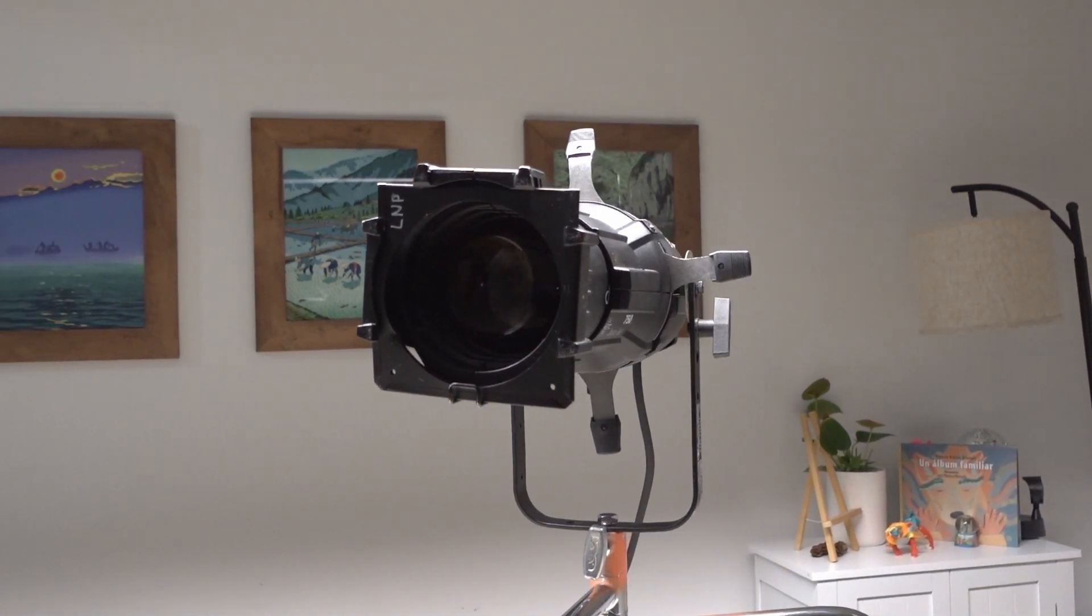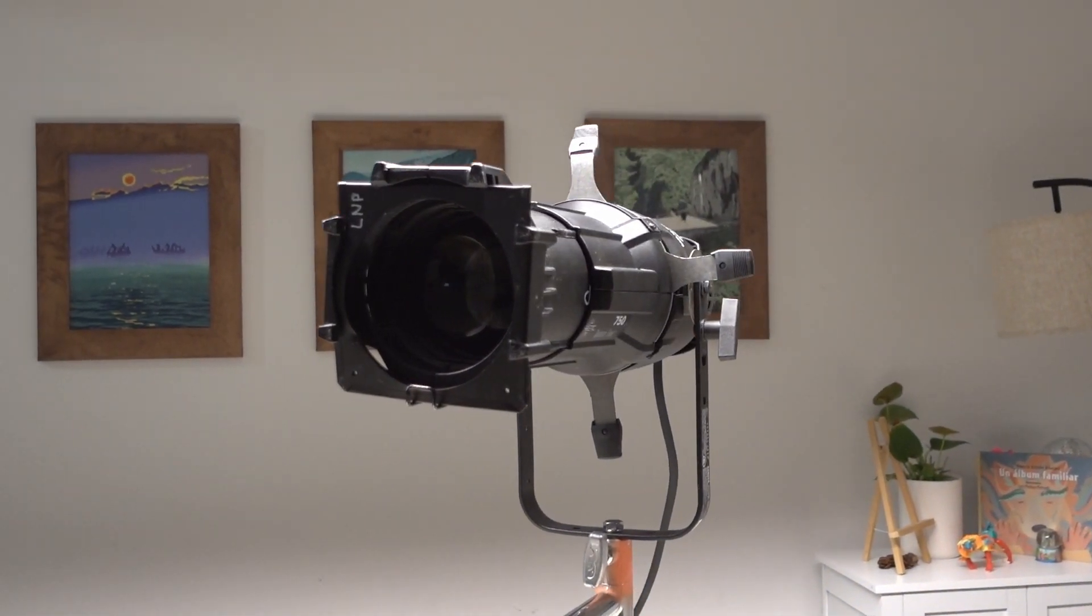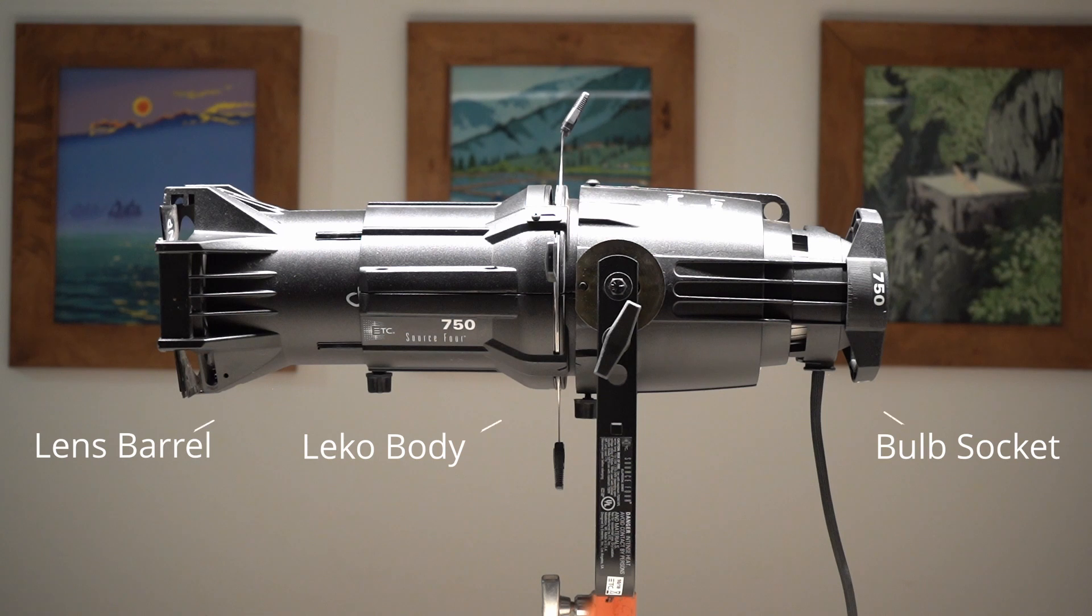This tungsten unit has three main parts: the bulb socket, the Leko body, and the lens barrel.